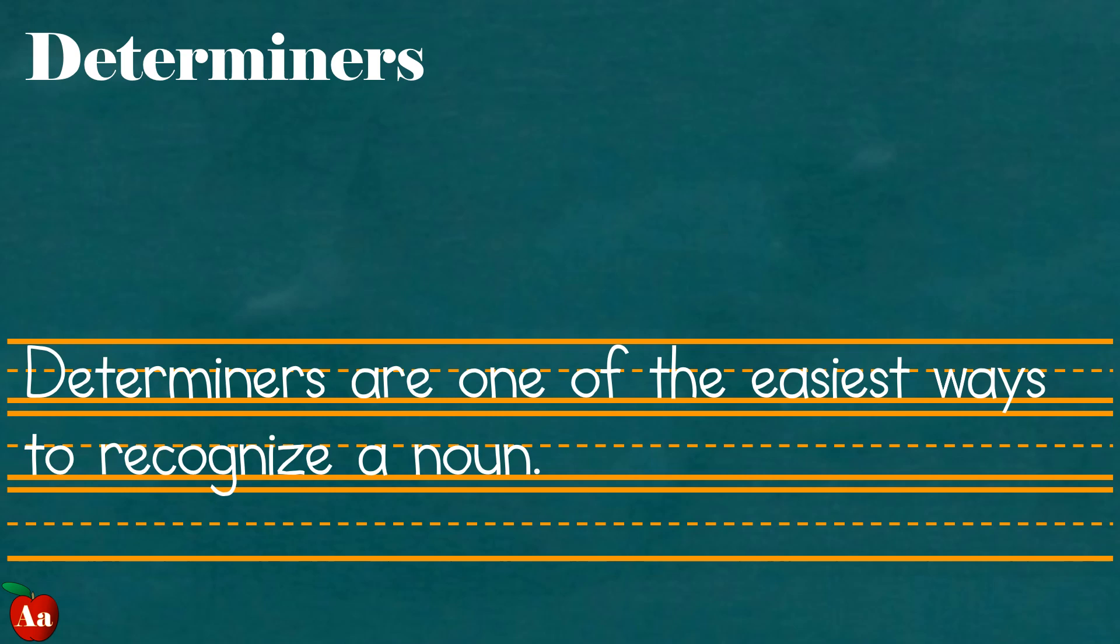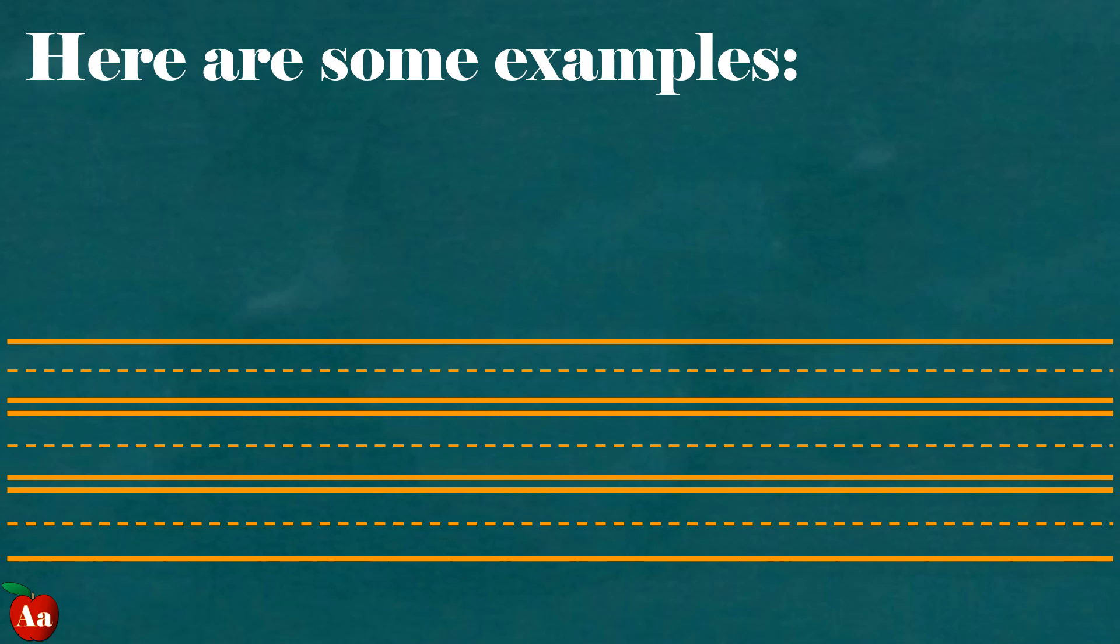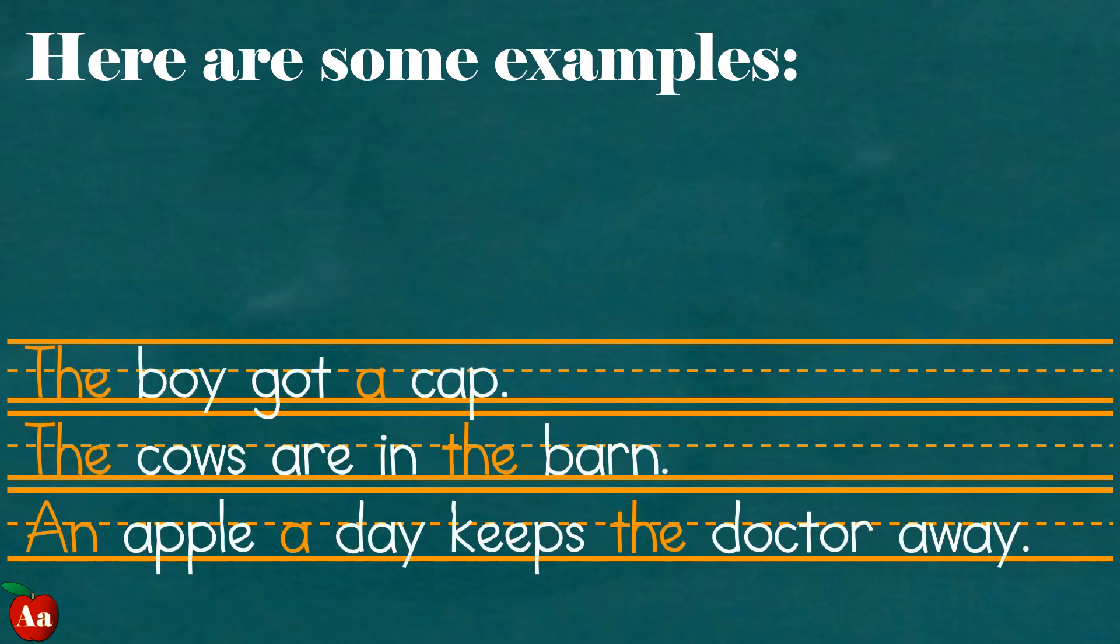Determiners are one of the easiest ways to recognize a noun. Here are some examples: The boy got a cap. The cows are in the barn. An apple a day keeps the doctor away.